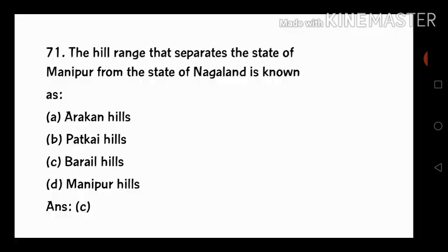Next question is number 71: the hill range that separates the state of Manipur from the state of Nagaland is known as? The answer is Boreal Pahar. So, the answer is C.